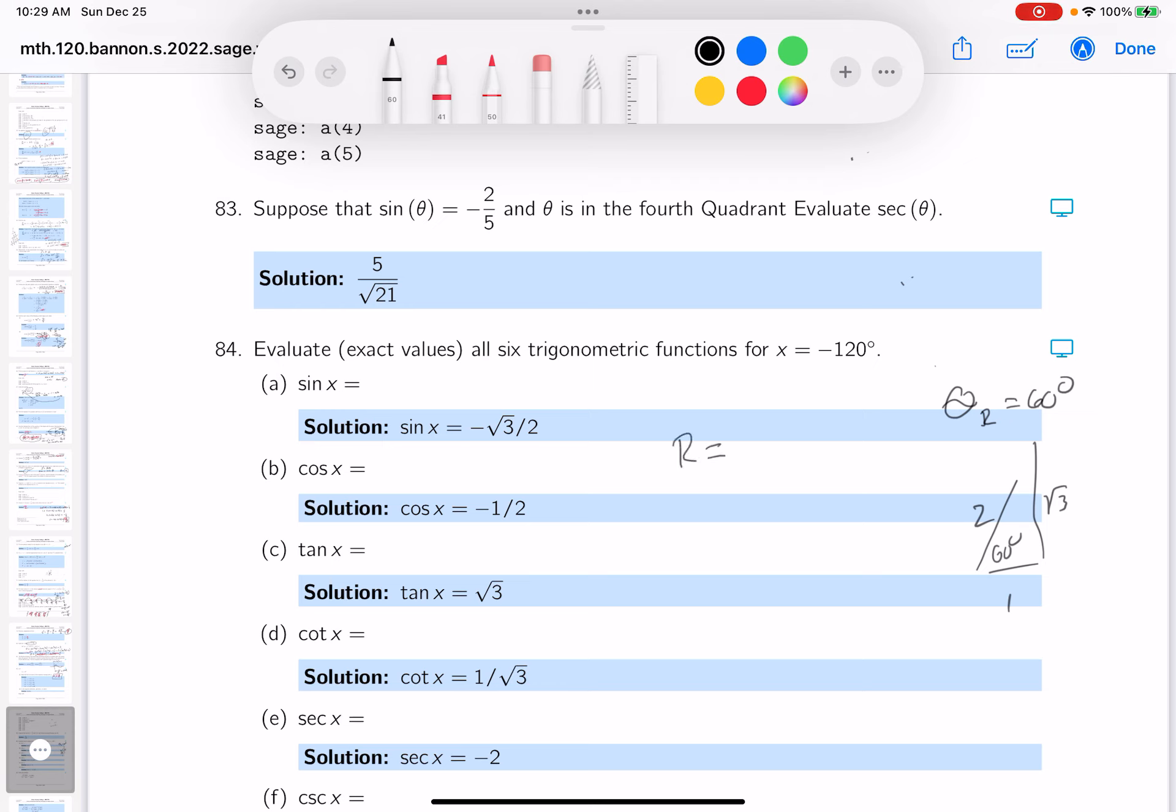The R would be 2. The X and the Y are both negative. So let's see. The X is going to be minus 1, and the Y is going to be minus root 3.